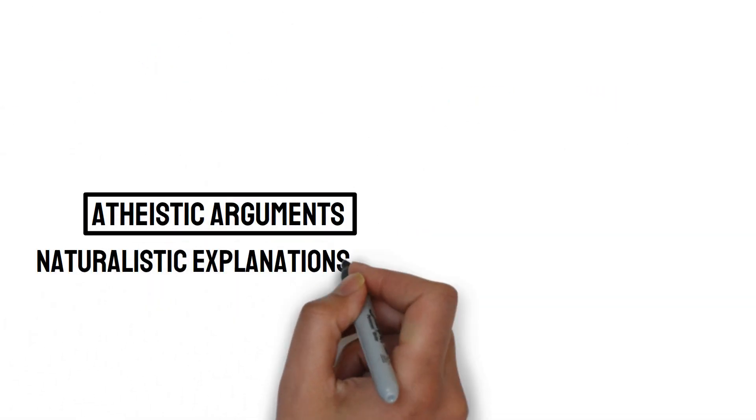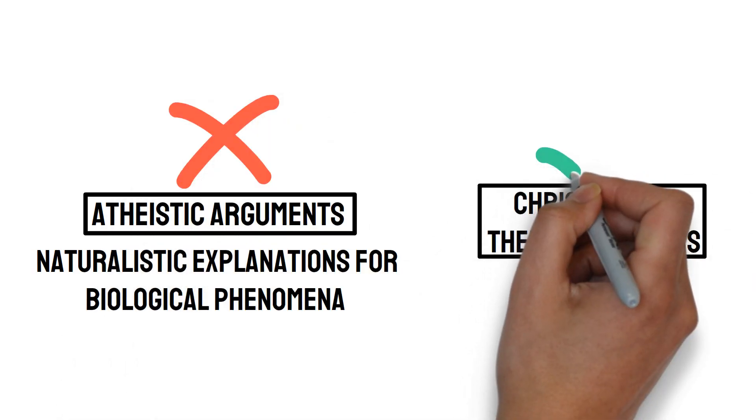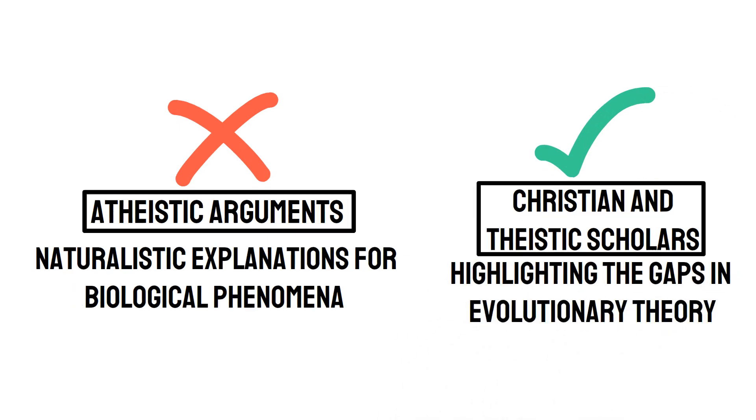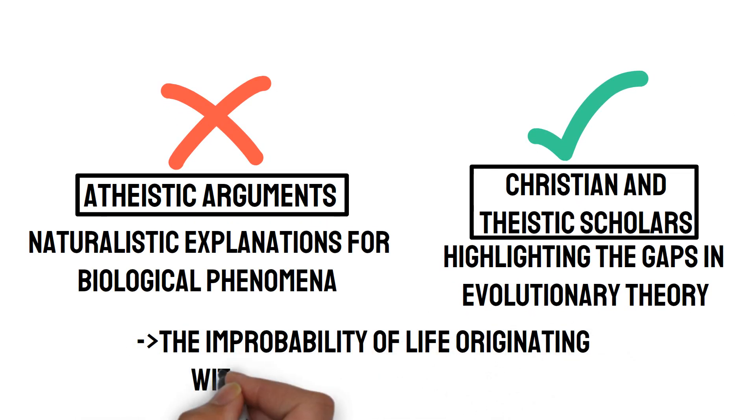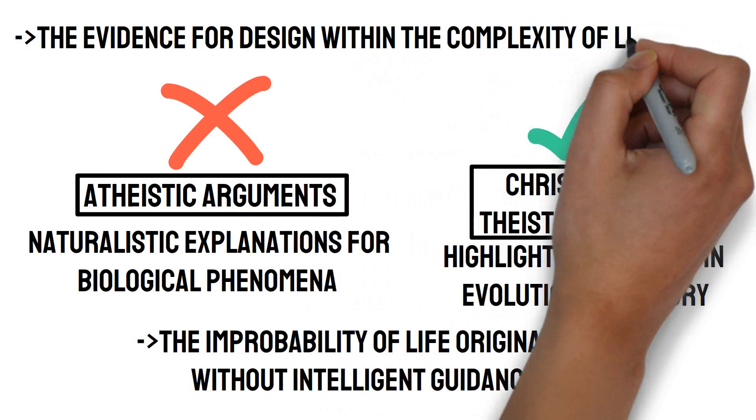In summary, while atheistic arguments often rely on naturalistic explanations for biological phenomena, Christian and theistic scholars provide robust counter-arguments by highlighting the gaps in evolutionary theory, the improbability of life originating without intelligent guidance, and the evidence for design within the complexity of life itself.